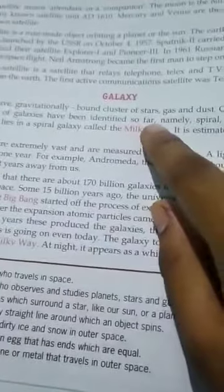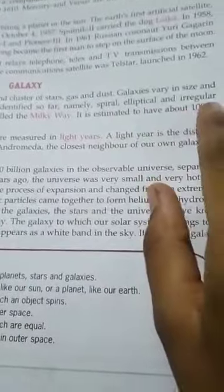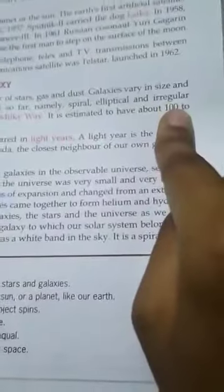Three types of galaxies have been identified so far: spiral, elliptical and irregular galaxies. Underline this.